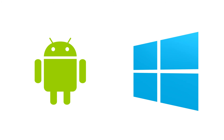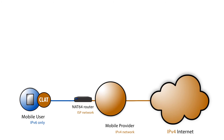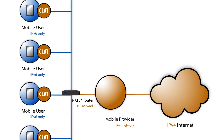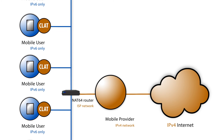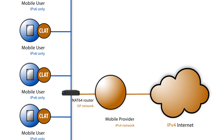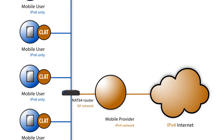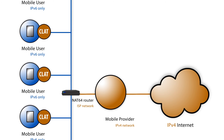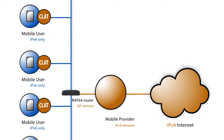There is a CLAT implementation for Android and for Windows Phone from version 8.1. 464xLAT helps a lot of mobile providers with their IPv6 implementations, because customers with a 464xLAT-capable phone can have an IPv6-only connection and still access all IPv4-only applications and content.